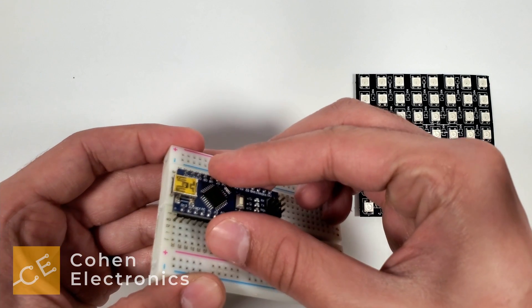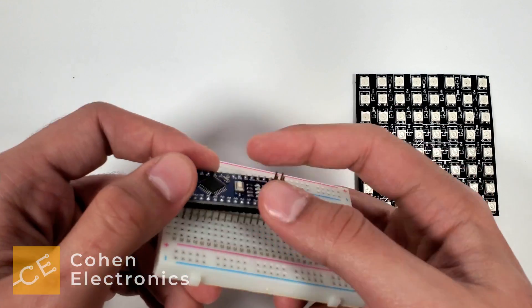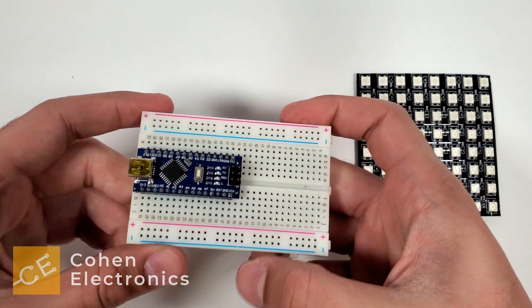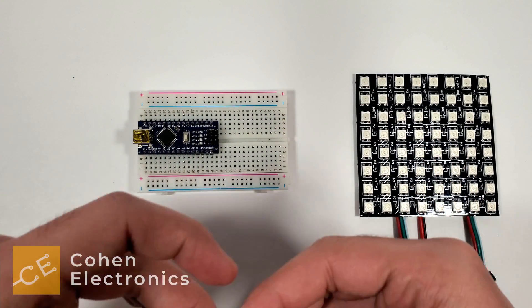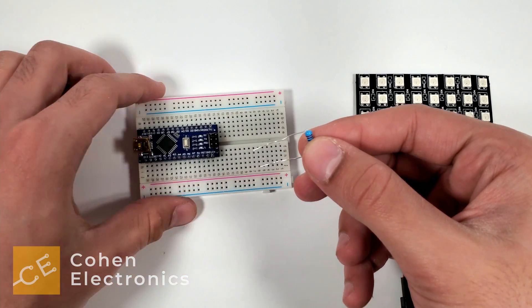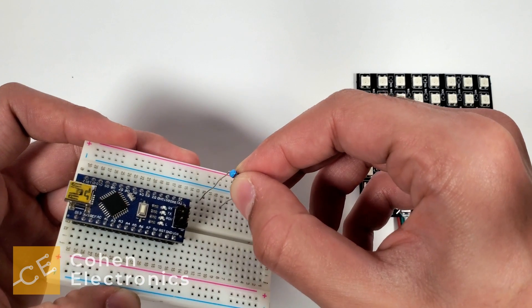First, place the Arduino Nano onto the breadboard. Now take the 220 ohm resistor and place it onto the breadboard.